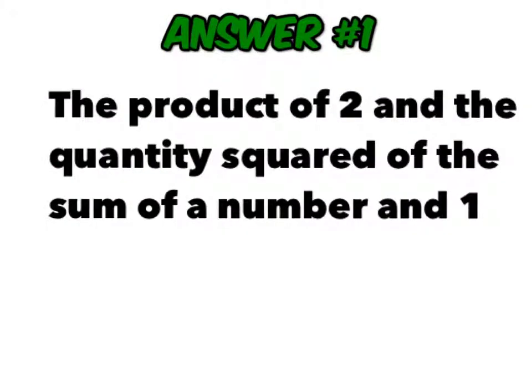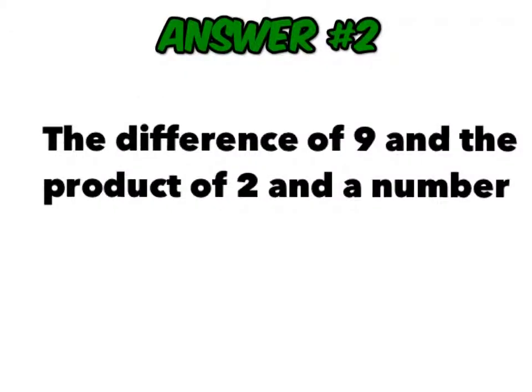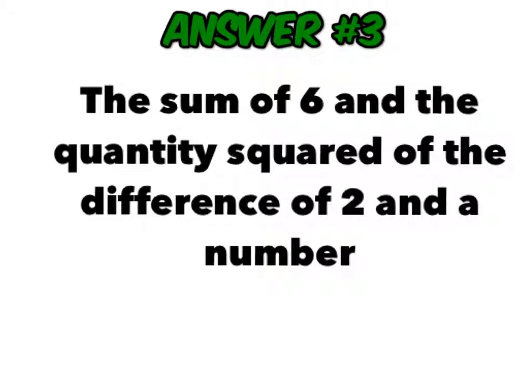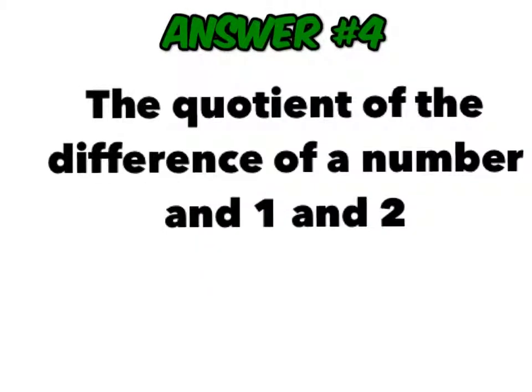Number 1: The product of 2 and the quantity squared of the sum of a number and 1. Number 2: The difference of 9 and the product of 2 and a number. Number 3: The sum of 6 and the quantity squared of the difference of 2 and a number. Number 4: The quotient of the difference of a number and 1 and 2.